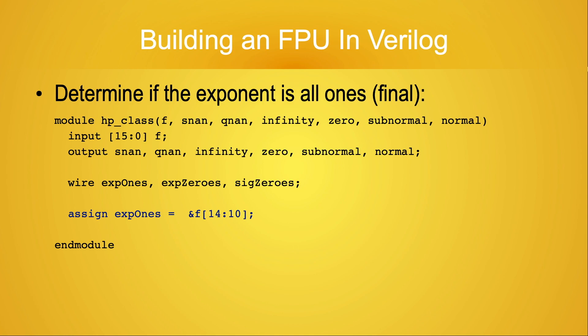It should be obvious that using the AND reduction operator will be even more useful when we have to deal with the larger exponent fields for the 32, 64, and 128-bit floating point formats.